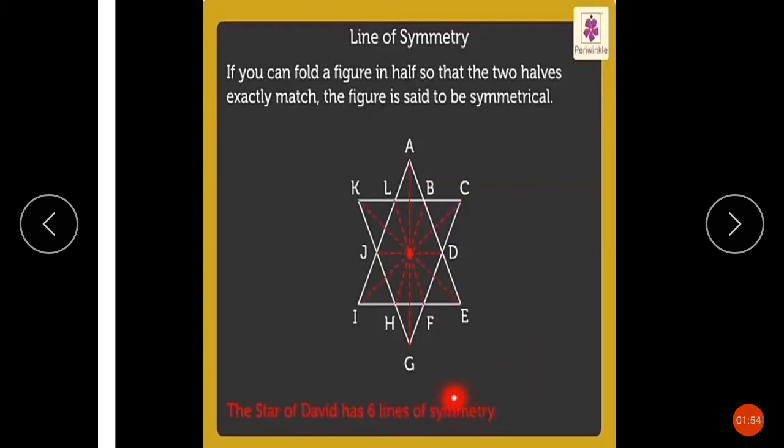The Star of David has six lines of symmetry. کہ ہم اس Star of David کو six lines of symmetry میں divide کر سکتے ہیں، ہم اس کو exactly match کر سکتے ہیں half کر کے six parts میں، six lines میں.